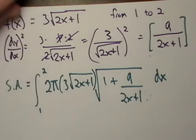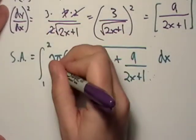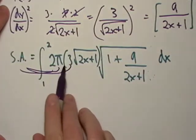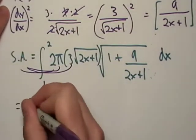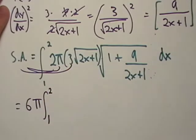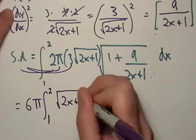We got that. Let me go back to purple then. We got that. What are we going to do? I'm going to yank these constants out. I'm going to yank out 2π√(2x+1).